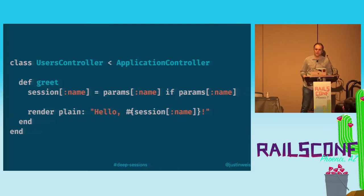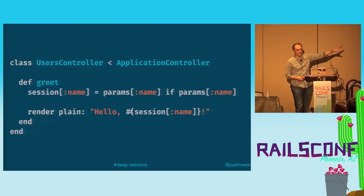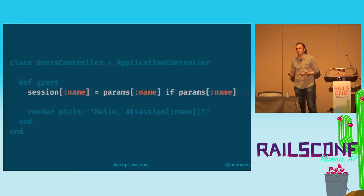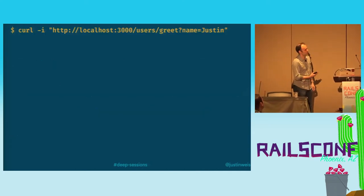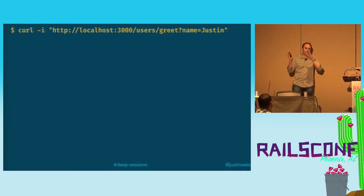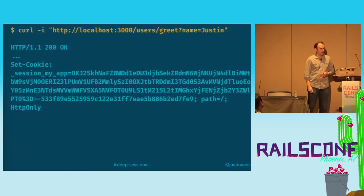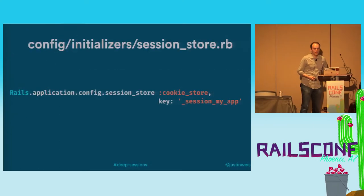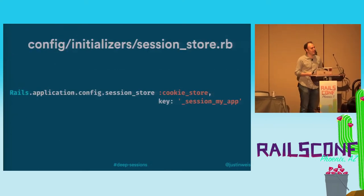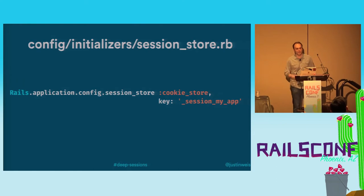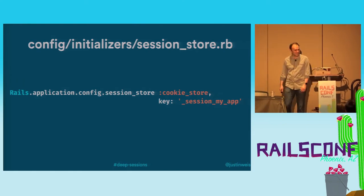So how does Rails get around these problems? Here we have a pretty simple controller action. It takes whatever's in params name and puts it into the session under session name. You can see that Rails stores the session under a single key — a single cookie — this session_my_app cookie. If you search the sample codebase for session_my_app, you'll find it in an initializer, session_store.rb. If you change that option, it'll change which key your session data is stored under, and also break all your old sessions in the process.